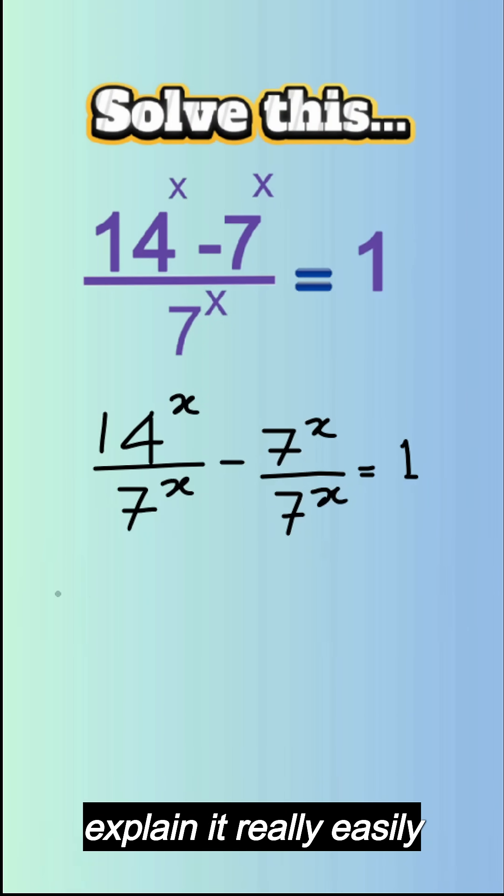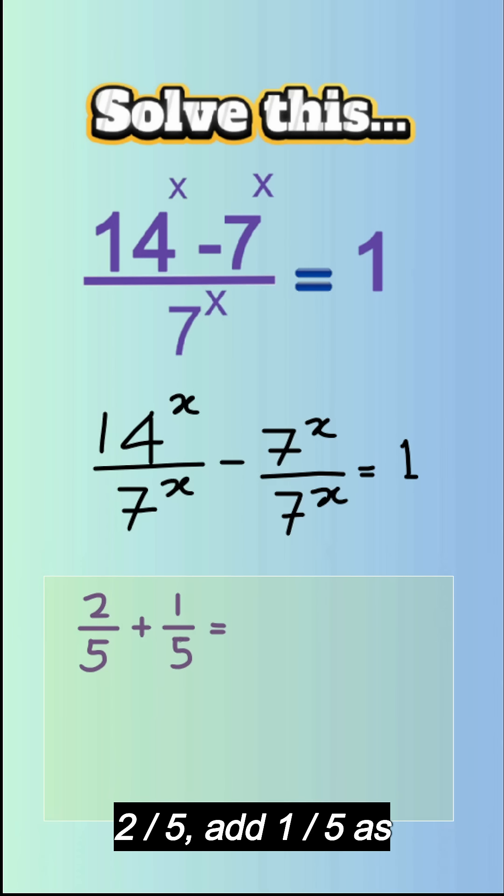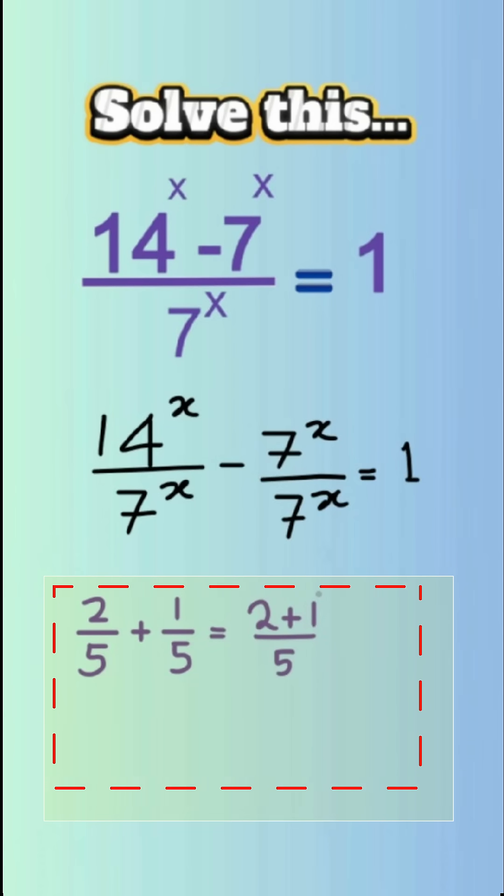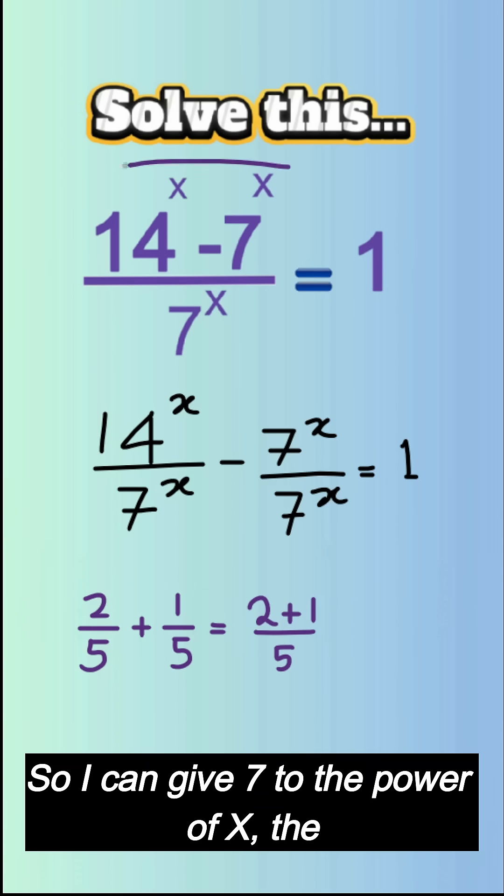Now if you are confused about this step, I can explain it really easily using this example. So we know we can write 2 over 5 add 1 over 5 as 2 add 1 over 5, which means I can do the reverse of that.